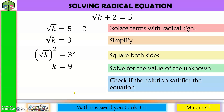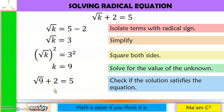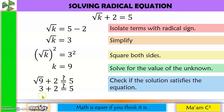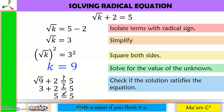Last step: check if the solution satisfies the original equation. Substitute k = 9: square root of 9 plus 2 equals 5. Square root of 9 is 3, and 3 plus 2 equals 5. Since 5 equals 5, our answer k equals 9 is the solution of this equation.